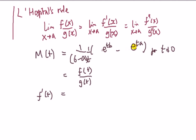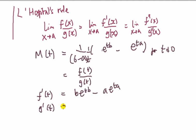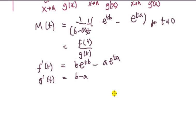So what this says is: differentiate the top with respect to t — that's going to be b·e^(tb) minus a·e^(ta). And the bottom bit, the derivative with respect to t, is going to be b minus a. Therefore, using L'Hôpital's rule: